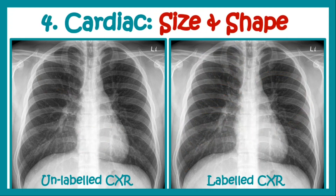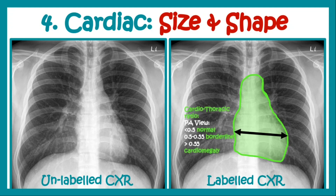Now we go for cardiac size and shape. For the size we determine the cardiothoracic ratio. We take the greatest diameter of the heart as indicated by the black arrow, then we take the thoracic diameter and take a ratio. In PA view, a cardiothoracic ratio of less than 0.5 is normal, 0.5 to 0.55 is borderline, and more than 0.55 indicates cardiomegaly. Now find the shadow of the heart and determine your cardiothoracic ratio.